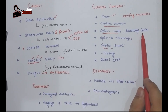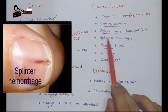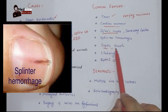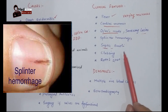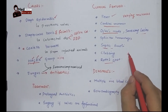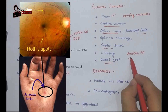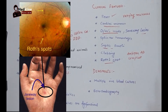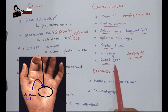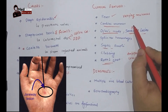Splinter hemorrhages are small hemorrhages inside the nail bed, also caused by septic emboli. Janeway lesions and Roth spots are caused by antigen-antibody complex deposition. Janeway lesions appear on the skin, while Roth spots appear on the retina. An important point: Janeway lesions are painless and erythematous, whereas Osler nodes are painful.